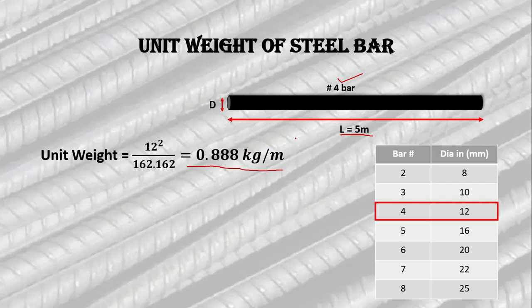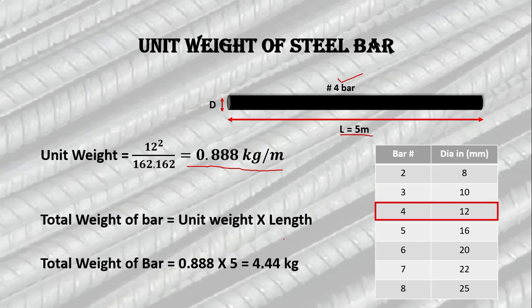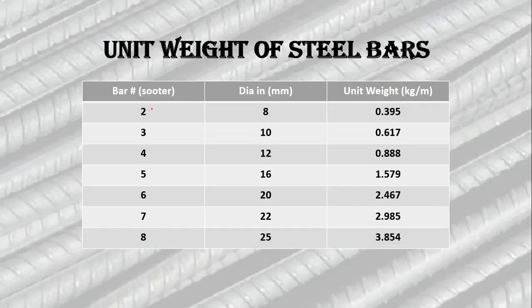Now we will calculate the total weight of this five meter length bar. We multiply the unit weight by the length of the bar. The total weight of this five meter number four bar will be 4.44 kilograms.